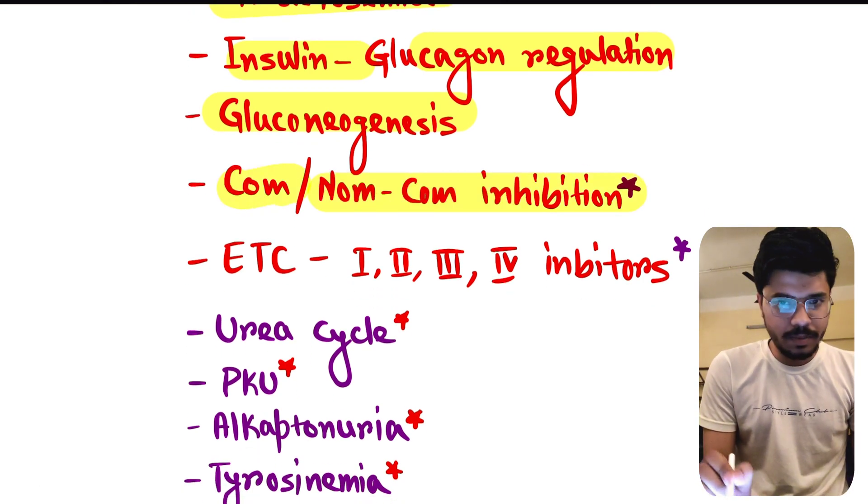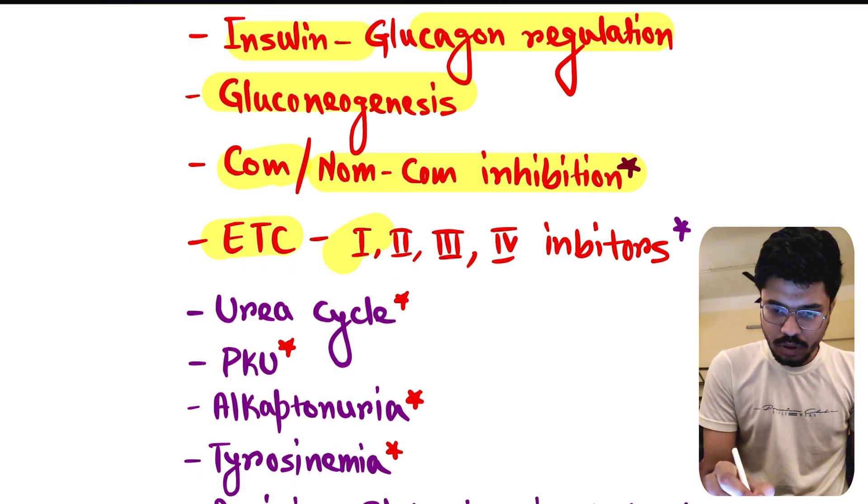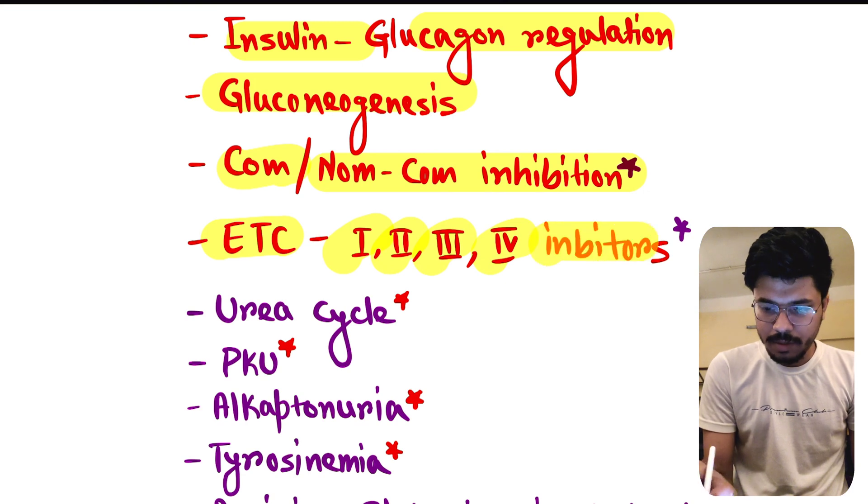Competitive non-competitive inhibition, these are extremely important. Electron transport chain complex 1, complex 2, complex 3, complex 4, inhibitors - every year minimum one question from this topic.